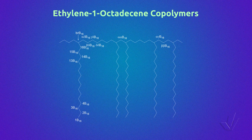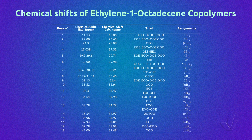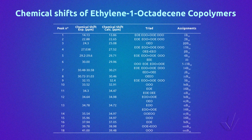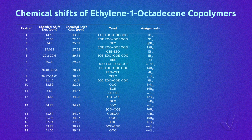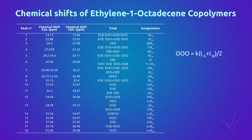Here we can see in this figure the structure of this copolymer and the nomenclature. We have obtained a table with all the possible triads of the ethylene-1-octadecene copolymer in the same way as before. In the same way that we have done before, we look for peaks that are related to triads in the table. We see that the triads O-O-O can be easily related to peaks 15 and 18, and triads E-O-O plus O-O-E to peaks 12 and 17.